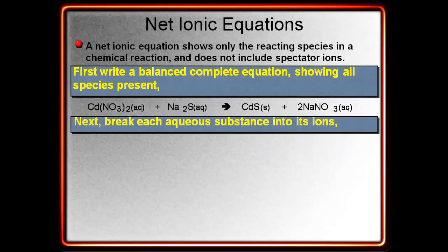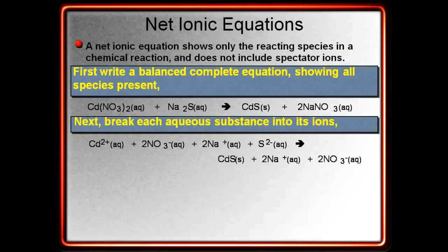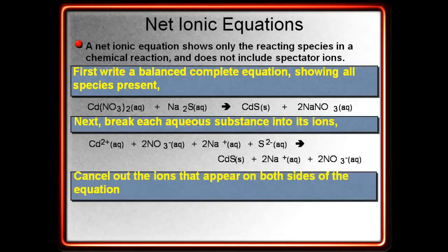Next, you want to break anything that is in aqueous form into ions because if it's in aqueous form, that means that it is separated in ions in solution. So, we can break down both of the reactants and one of the products. Now, the cadmium-2 sulfide is a solid, so we keep that as a compound. We do not break that up.